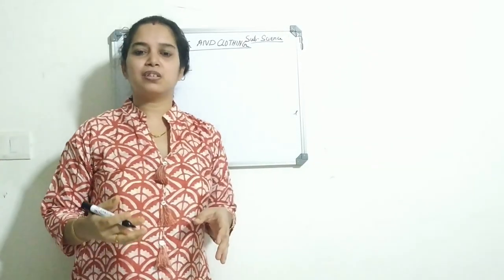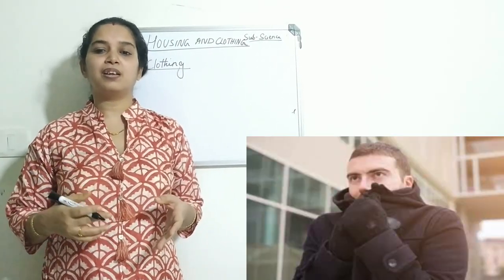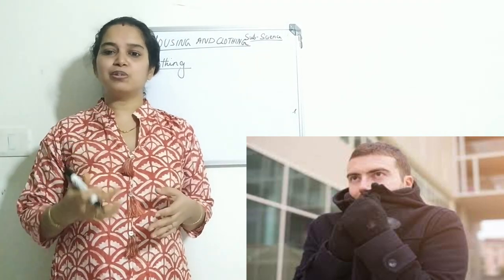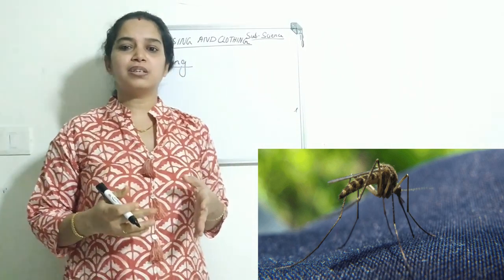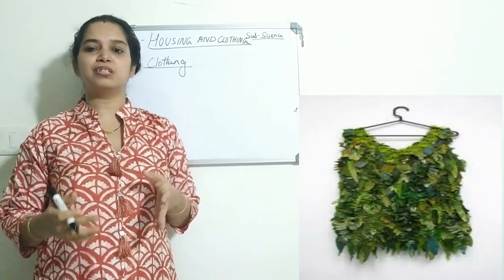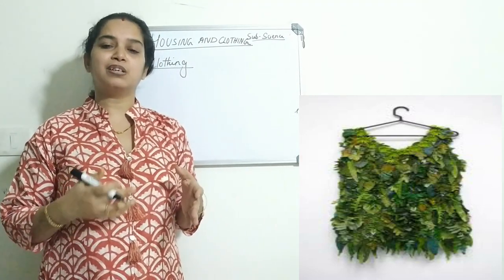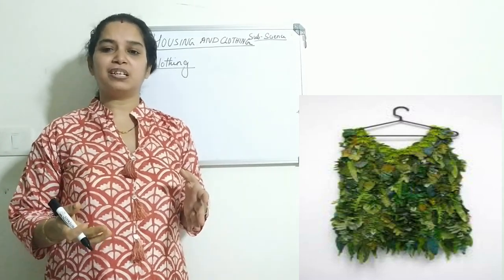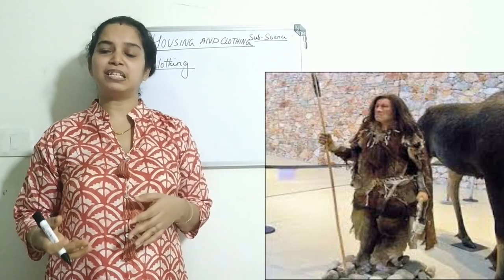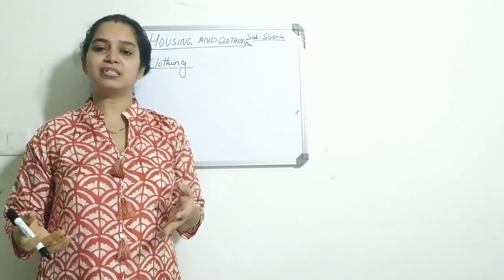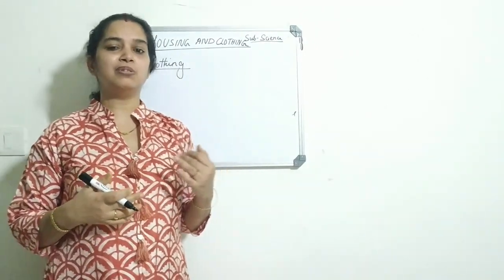Now we will discuss clothing. We cover ourselves with clothes to protect us from heat, cold, rain, and also from insect bites. Clothes also make us look smart. Previously, people made clothes from leaves, fur, and animal skin. Now we wear clothes made up of cotton, silk, jute, plastic, and man-made fibers.